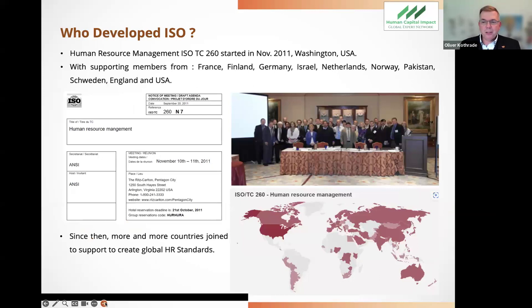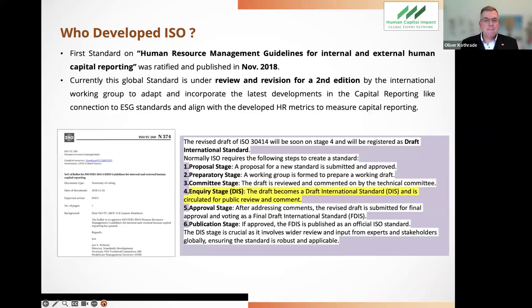Here you can see how our journey began. We started in November 2011 with the first plenary meeting of our Technical Committee TC 260 in Washington, USA. You can also see the first member countries that joined that meeting in Washington, and more and more countries all over the world are now contributing to TC 260, where we are working on various documents for human resource management. Today we are speaking about the human resource management guideline for internal and external human capital reporting — this was one of the first guidelines we ratified and published back in November 2018.